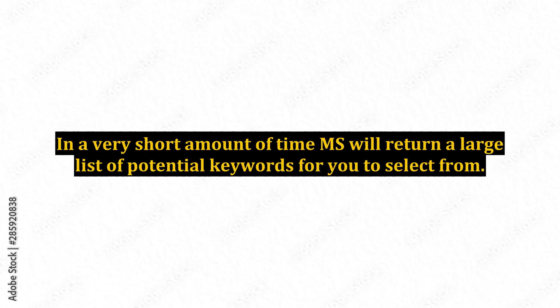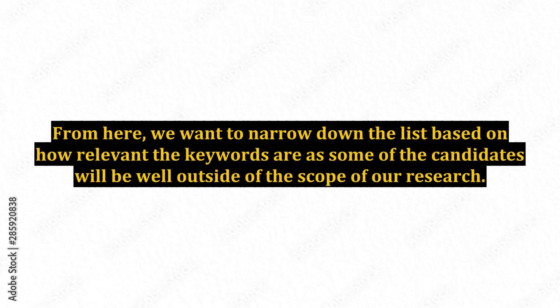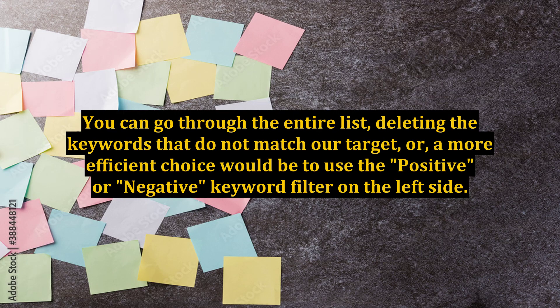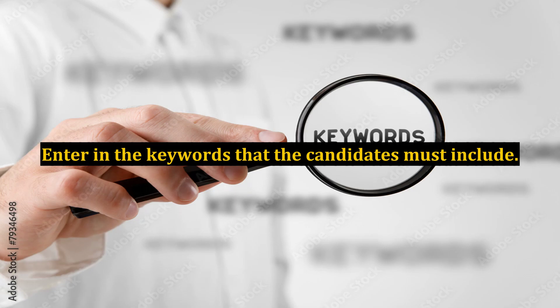In a very short amount of time, Market Samurai will return a large list of potential keywords for you to select from. From here, we want to narrow down the list based on how relevant the keywords are, as some of the candidates will be well outside of the scope of our research. You can go through the entire list deleting keywords that do not match our target, or a more efficient choice would be to use the positive or negative keyword filter on the left side.